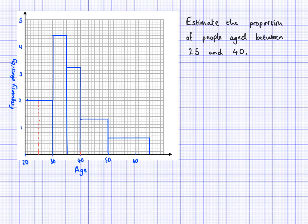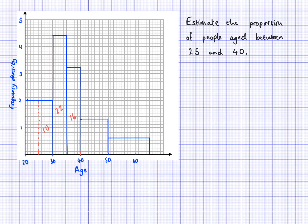Remember that the area in a histogram in GCSE maths or GCSE statistics will represent the frequency. So I'm going to find the areas of these three bars. This is 5, and 5 times 2 gives me the area of this rectangle — so 5 times 2 is 10, meaning there are 10 people there. The next one I have 5 again, and 5 times 4.4 is 22. And this last one I have 5 times 3.2, and that's 16. Now if I add these up, that's how many people between ages 25 and 40 I've estimated using my histogram.